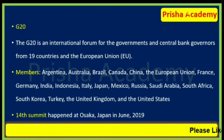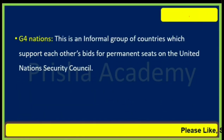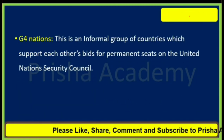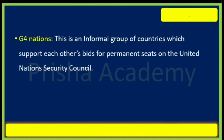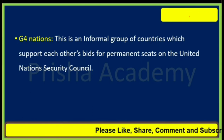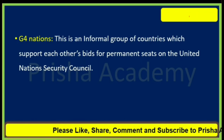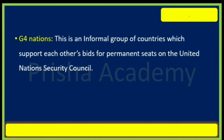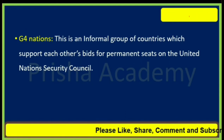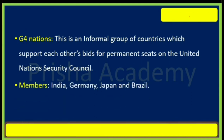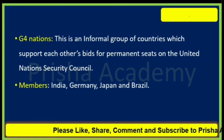Next is G4 nations. This is an informal group of countries which support each other's bids for permanent seats on the United Nations Security Council. The members are India, Germany, Japan, and Brazil.